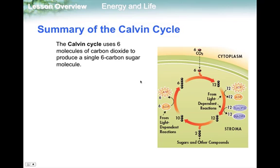You'll notice no light is directly entering the Calvin cycle — that's why we call it the light-independent reactions. But both ATP and NADPH come from the light-dependent reactions — that's where the plant actually gets its energy. By using the Calvin cycle together with the light-dependent reactions, plant cells can generate sugar compounds that they're then able to use for energy or building structures.